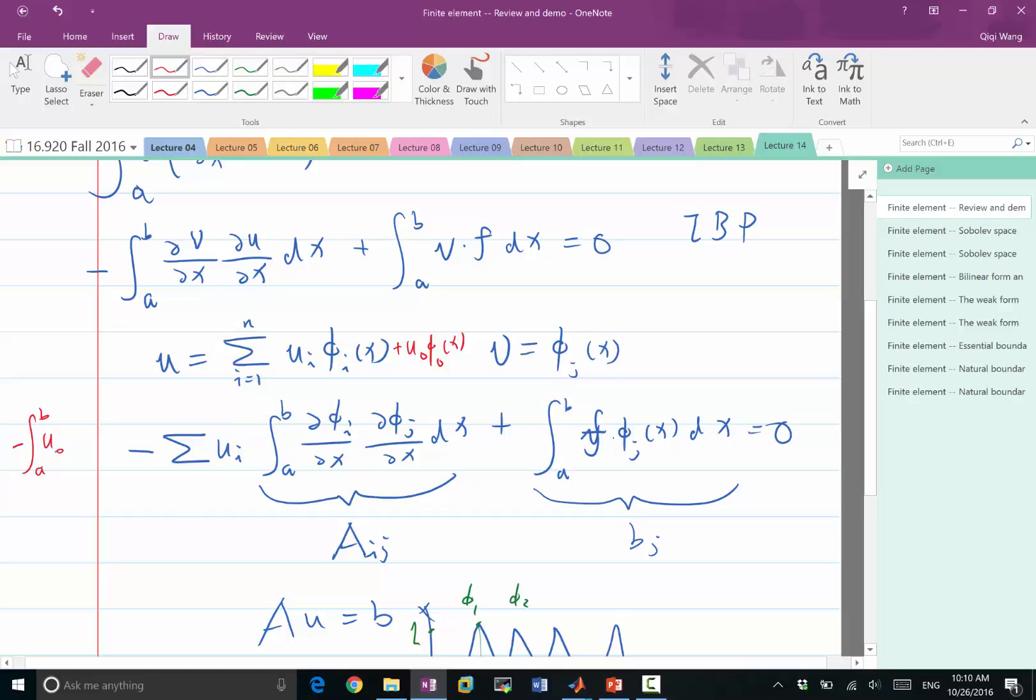which is very similar to this term, but with a known u0, partial phi0 times partial phi0, partial x times partial phi_j, partial x.